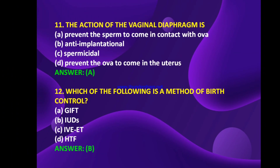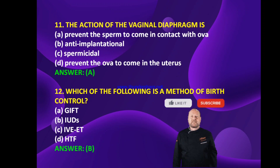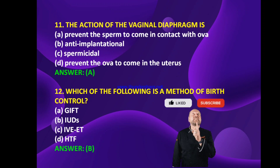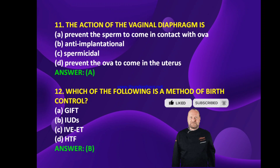The action of the vaginal diaphragm is: prevent the sperm from coming in contact with ova, anti-implantational, spermicidal, or prevent the ova from coming into the uterus. The answer is A — the action of the vaginal diaphragm is to prevent the sperm from coming in contact with ova.